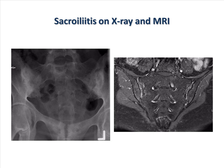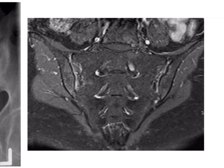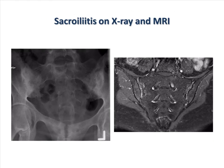Sacroiliitis can be detected on x-ray as well as MRI. On the left, the patient has at least grade 3 bilateral sacroiliitis present on the pelvic x-ray. On the right, the MRI shows periarticular bone marrow edema and active sacroiliitis on fat-saturated T2-weighted sequence. Sacroiliitis can also be present on STIR sequences, and there should be two or more lesions in one slice, or a single lesion in two or more consecutive slices, before this can be considered a positive MRI finding.